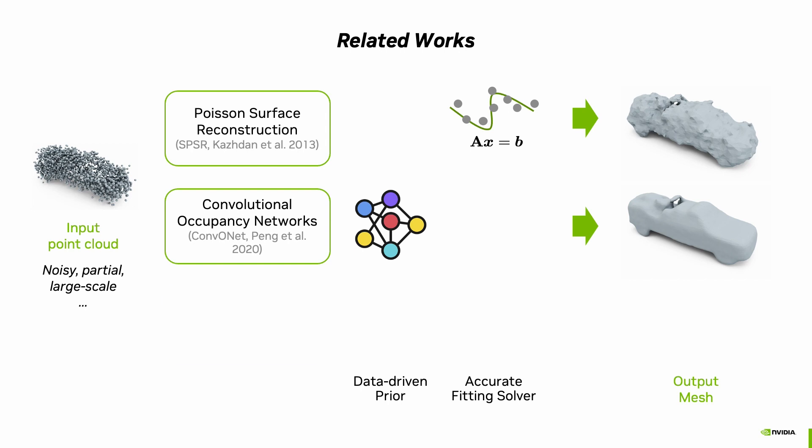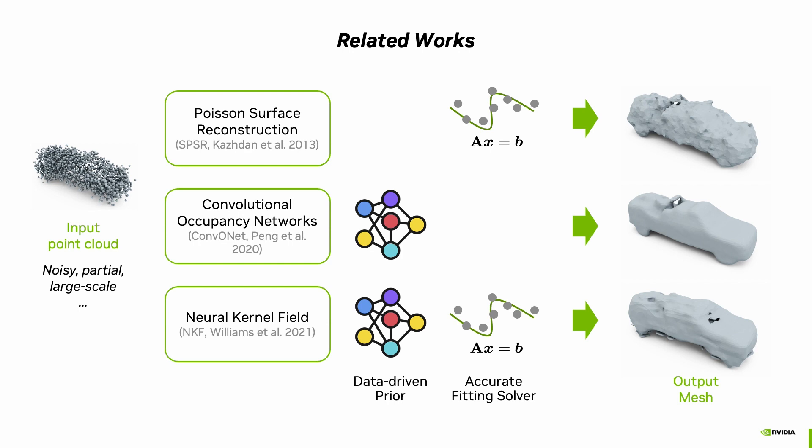To address these limitations, the neural kernel field method, published in last year's CVPR, combines both approaches by using networks to learn data-dependent kernels and employing the fitting solver to accurately interpolate the input points.